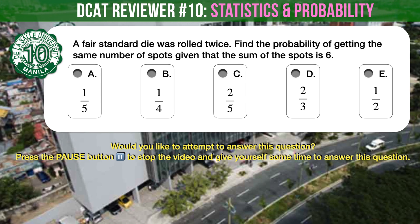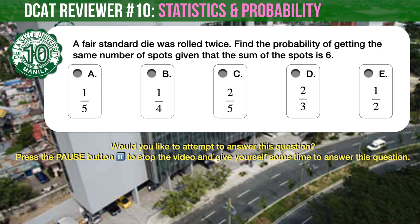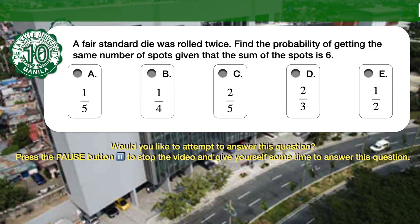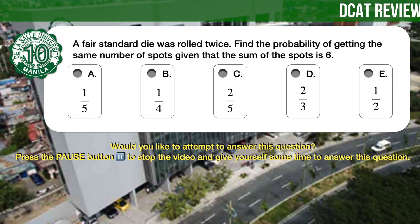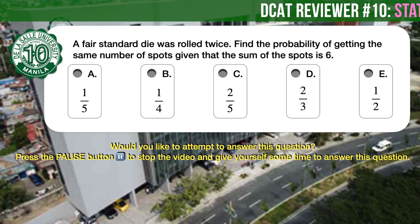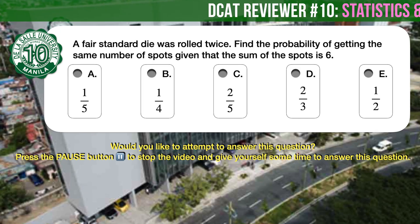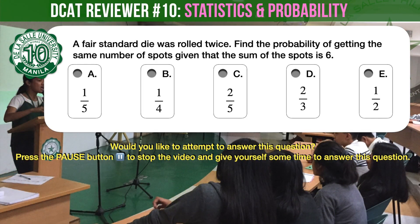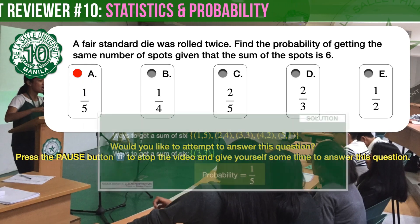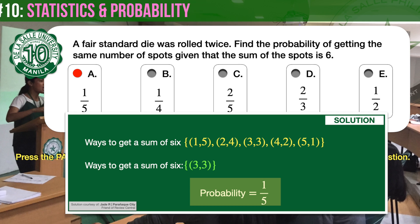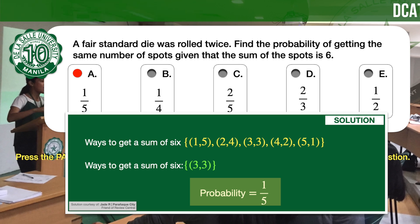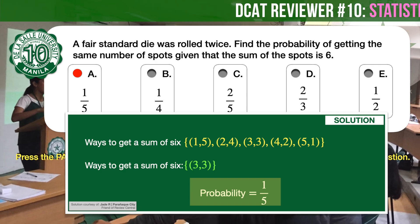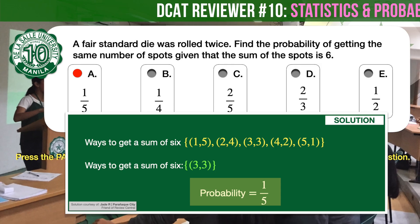Question number 10. A fair standard die was rolled twice. Find the probability of getting the same number of spots, given that the sum of the spots is 6. The correct answer is A, 1 over 5. There are 5 ways to get a sum of 6 when rolling a fair die twice. Out of the 5, there is only one way of getting the same number of spots. Therefore, the probability is 1 over 5.